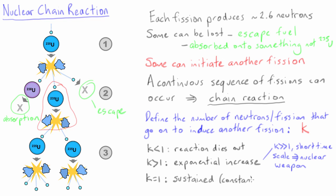If K is equal to 1, there will be a sustained constant rate of fission reactions. This is the desired condition for power generation.